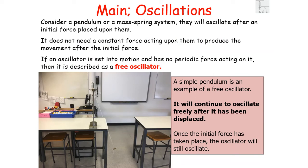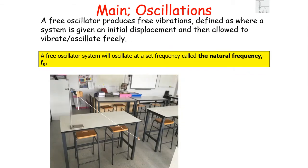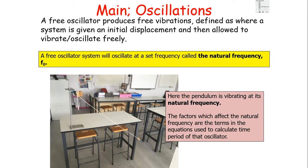Consider a pendulum or a mass-spring system — they will oscillate after an initial force is placed upon them to overcome inertia and don't need a constant force after that. If an oscillator has no periodic driving force acting upon it, we describe it as a free oscillator. A simple pendulum is an example: once displaced, it oscillates freely. A free oscillator produces free vibrations, defined as when a system is given an initial displacement and then allowed to oscillate freely at its natural frequency, given the symbol F₀.